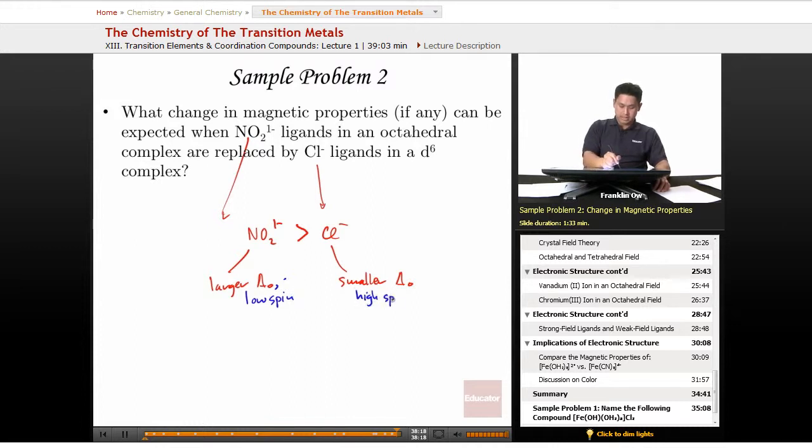Let's go ahead and draw the possibilities out. d^6 low spin means that all of the electrons are paired, and that's going to be diamagnetic. Here we have d^6 high spin, and we get at least one unpaired electron, which is going to be paramagnetic.